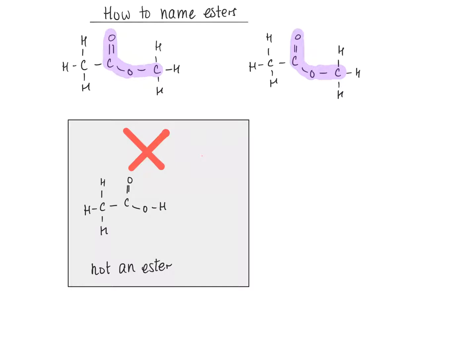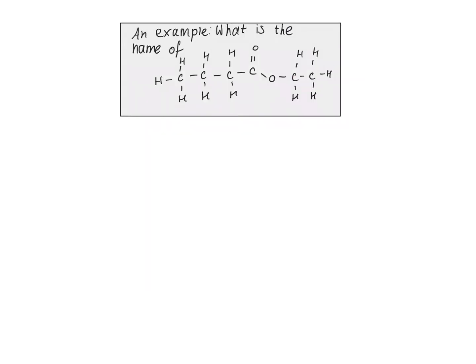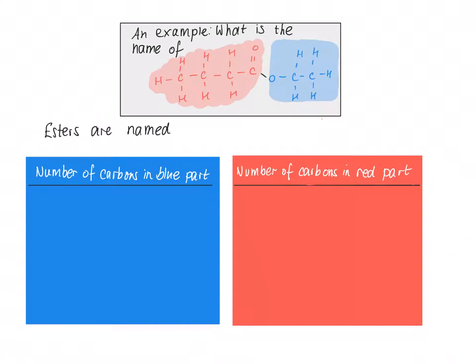Esters are made of two parts. They're made of a bit that's derived from a carboxylic acid and a bit that's derived from an alcohol. So in this example, the bit derived from the carboxylic acid is shown in red, and the bit derived from the alcohol is shown in blue.